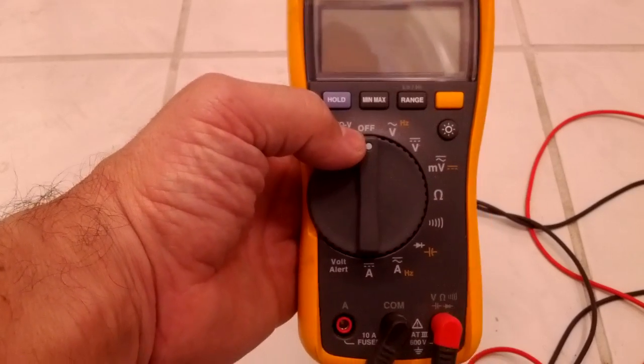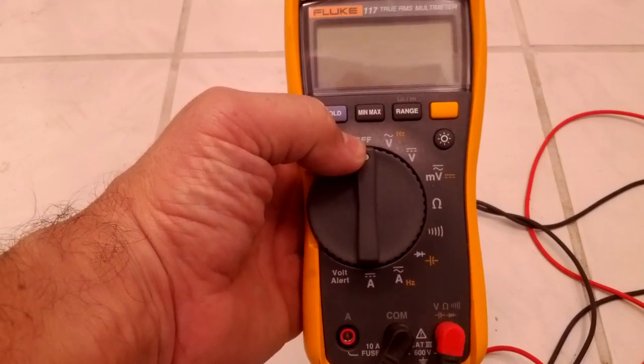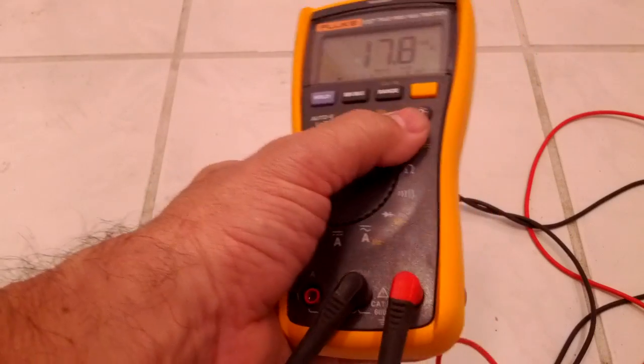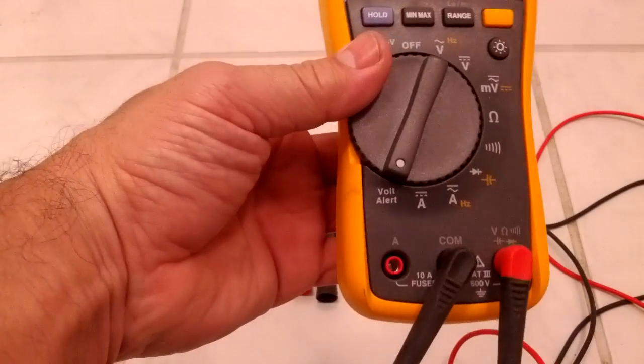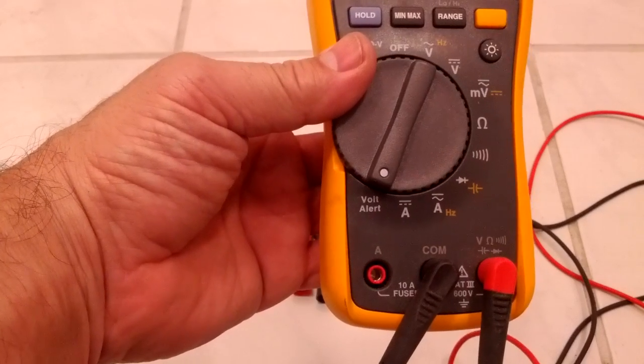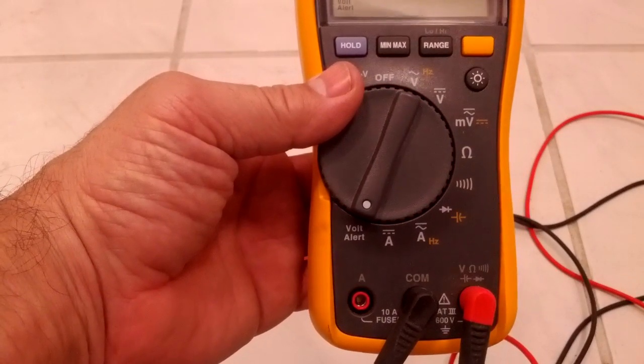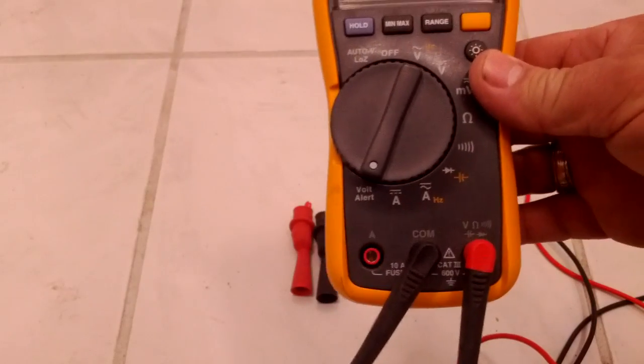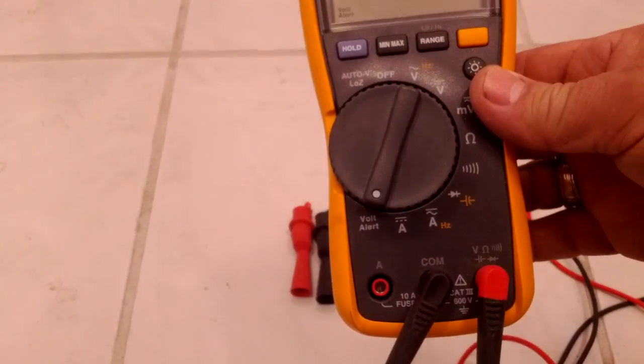However, this one features things that an electrician would likely use. One of the things is you can see at the bottom it says Volt Alert. Well, if you have a non-contact volt meter or volt tester, it's the same thing. I'll have to mute with this camera, so give you a demonstration.